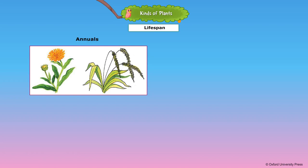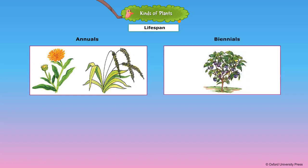During the year, an annual plant germinates, flowers, produces seeds, and dies. Examples of annual plants are sunflower, marigold, and rice. Biennials: a biennial plant is one that requires two years to complete its life cycle.